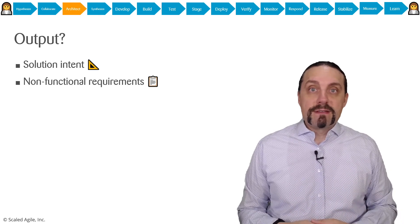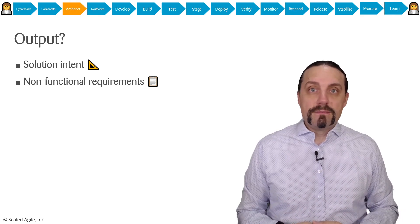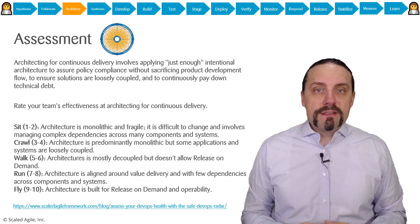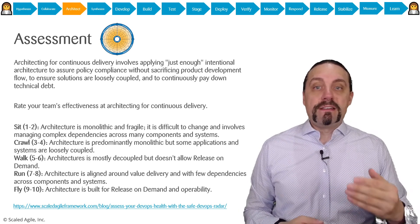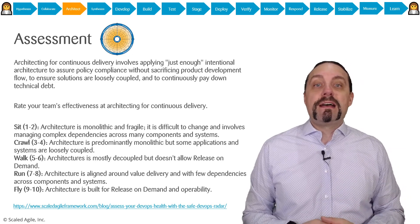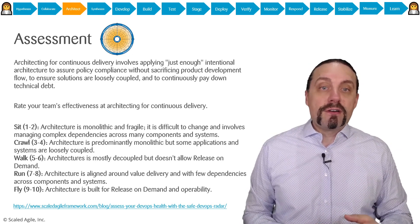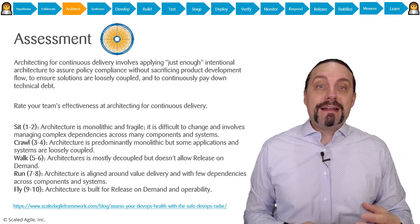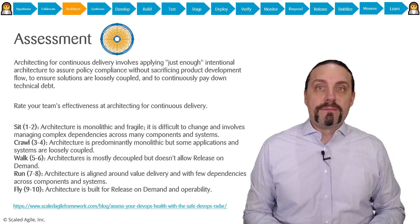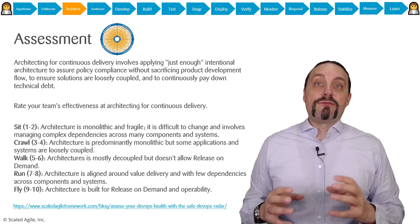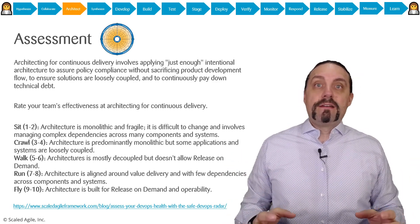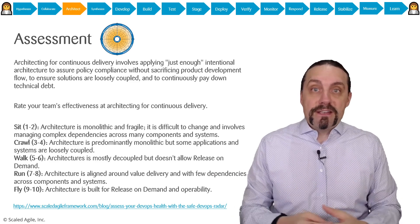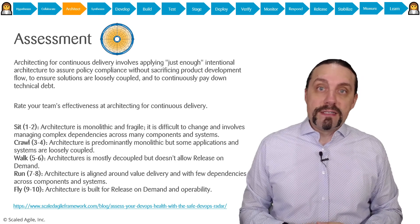Let's have a look at the assessment. Architecting for continuous delivery involves applying just enough intentional architecture to assure policy compliance without sacrificing product development flow, to ensure solutions are loosely coupled, and to continuously pay down technical debt. So now you're going to rate your team, your agile release train, your product, or yourself about the efficiencies at architecting for continuous delivery.